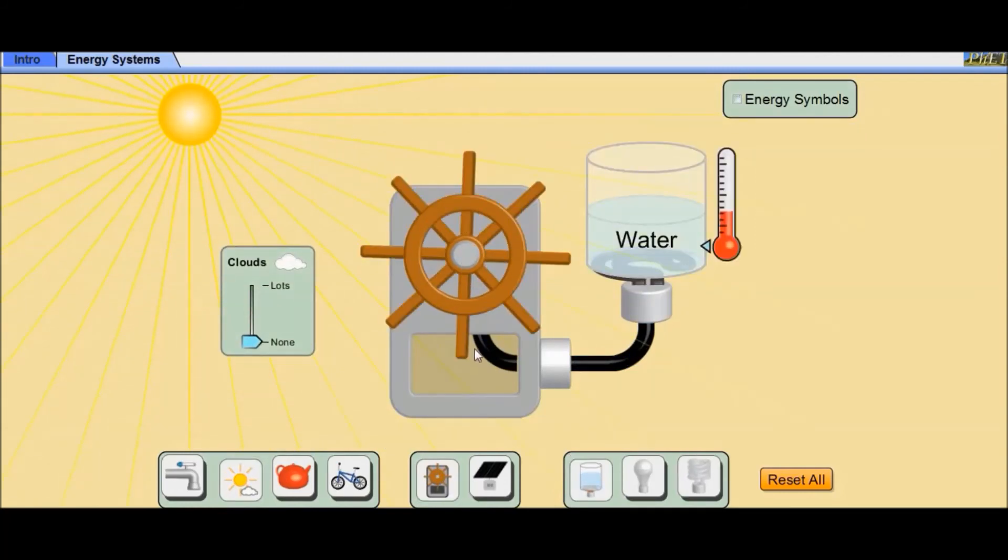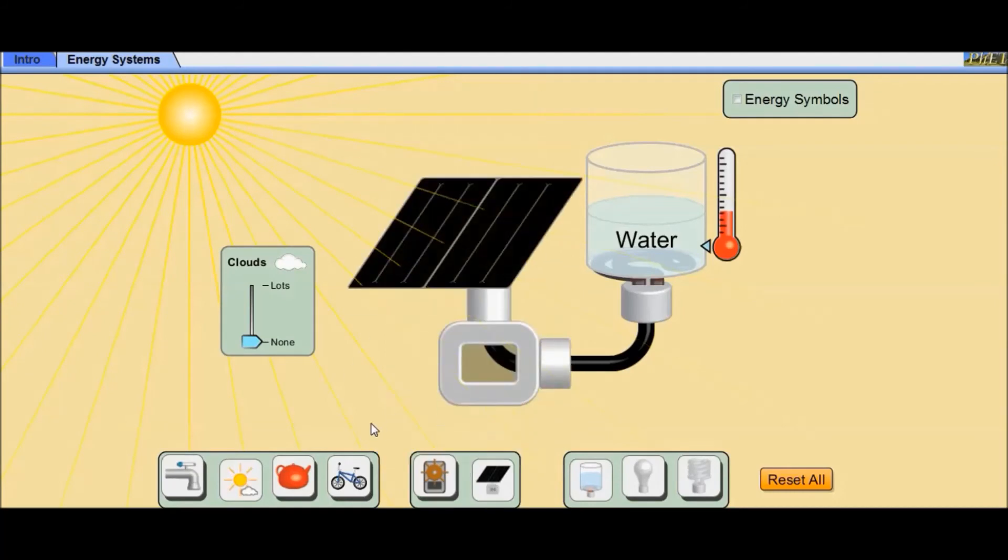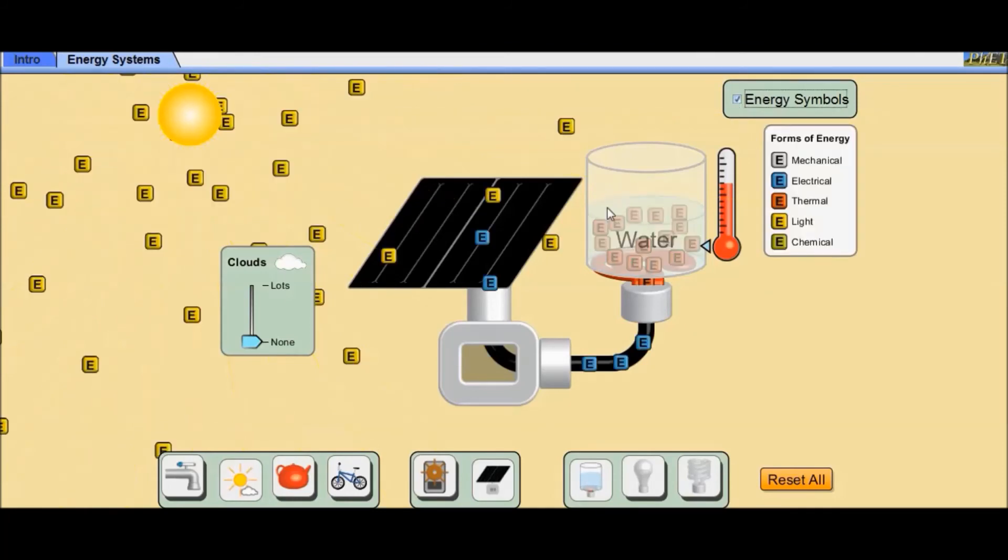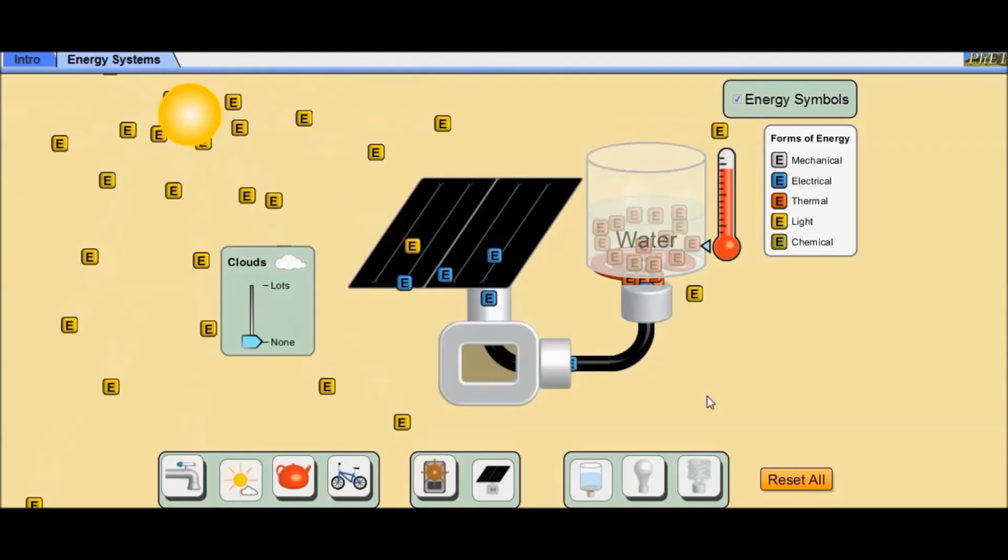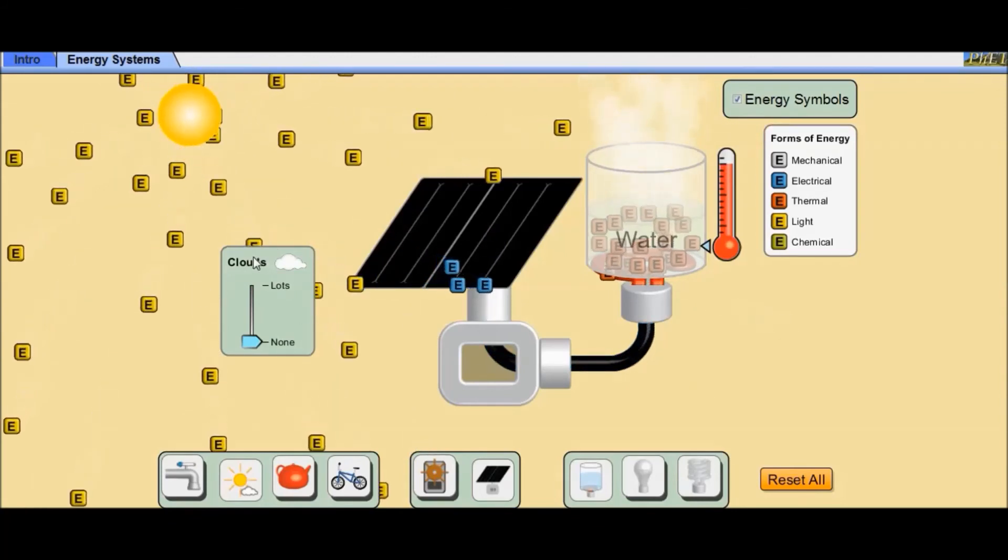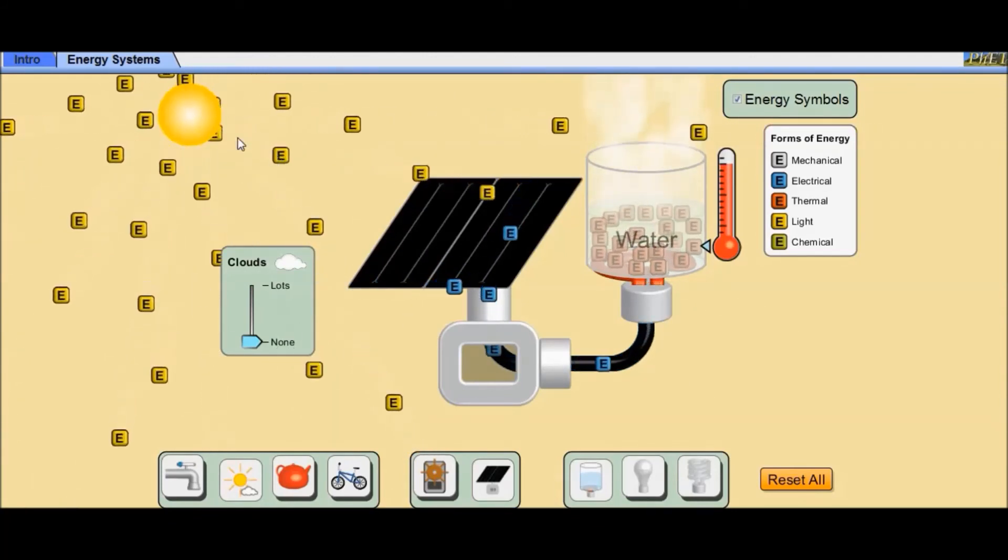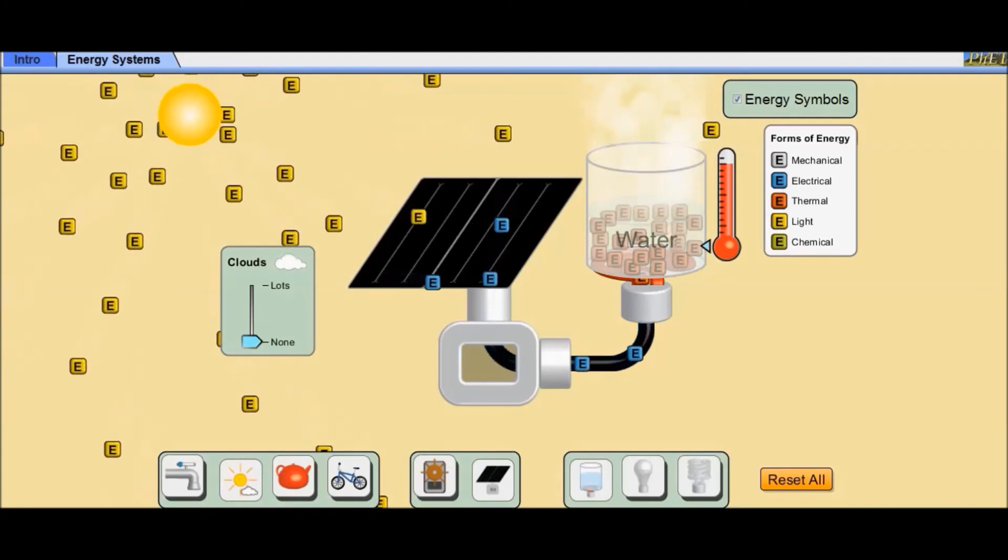Now, let's see how the solar or light energy is converted into various forms of energy. When there are no clouds, the light energy from the sun is absorbed by the solar panel and releases electrons, which are stored in the battery in form of electrical energy. This electrical energy is supplied to heater, where it is converted into heat energy.